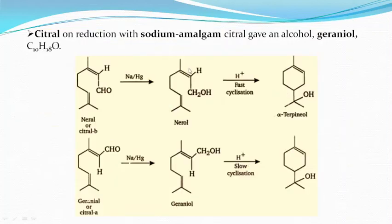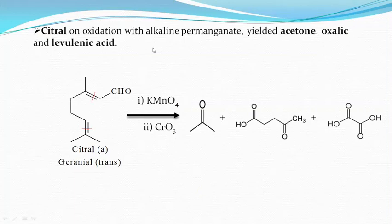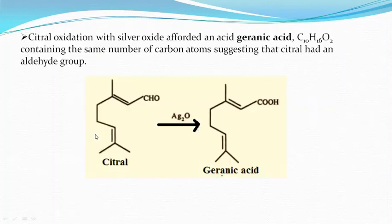Citral on reduction with sodium amalgam gives the alcohol geraniol. On oxidation with alkaline KMnO4, citral yields acetone, oxalic acid, and levulinic acid. Here you can see how the oxidation takes place: first potassium permanganate causes hydroxylation, then chromic acid oxidation. The bond cleavage takes place yielding acetone, oxalic acid, and levulinic acid. Citral on oxidation with silver oxide forms geranic acid, suggesting that citral has an aldehyde group that converts into a carboxyl group.